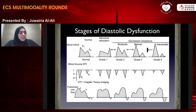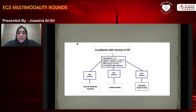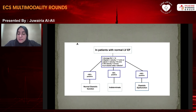The latest guidelines say you have to include four parameters in the assessment of diastolic dysfunction: an average E to E prime ratio greater than 14, a septal E prime velocity less than 7 cm/s or lateral E prime velocity less than 10 cm/s, a TR velocity greater than 2.8 m/s, and a LA volume index greater than 34 mL/m². If the patient has normal LV function and more than half of these parameters are positive, you have diastolic dysfunction. If less than half are positive, diastolic function is normal.